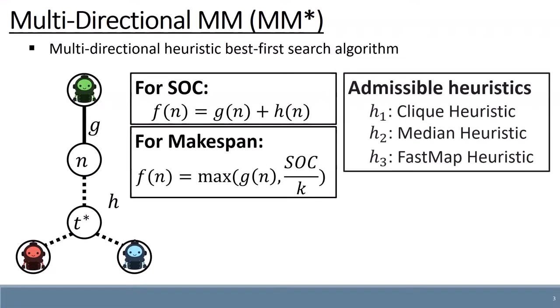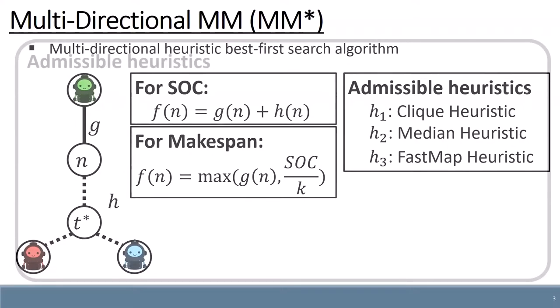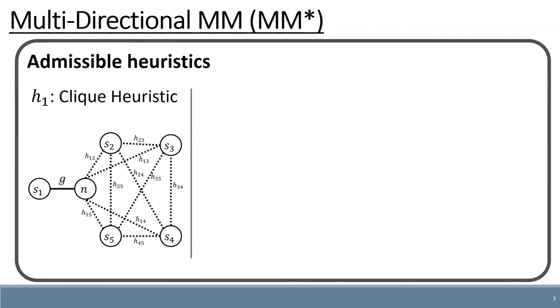We suggest three such admissible heuristic functions. I now briefly explain each of these heuristic functions. H1, the clique heuristic, uses a classic heuristic, such as a straight-line heuristic, between each two locations, to compute a heuristic for the meeting location.